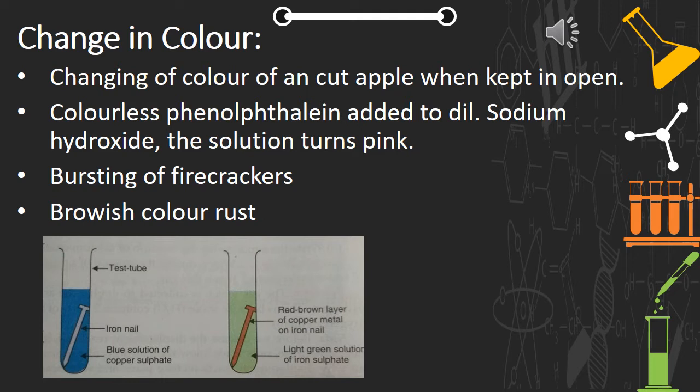The first example is the changing of color of a cut apple when kept in the open. If we cut an apple into slices and keep it in the open for some time, the slice of apple acquires a brown color due to the formation of new substance. This happens due to the reaction of oxygen and acid in the apple. Similarly, the cut surface of brinjal or potato also turns red when kept in air, which is again due to chemical change.